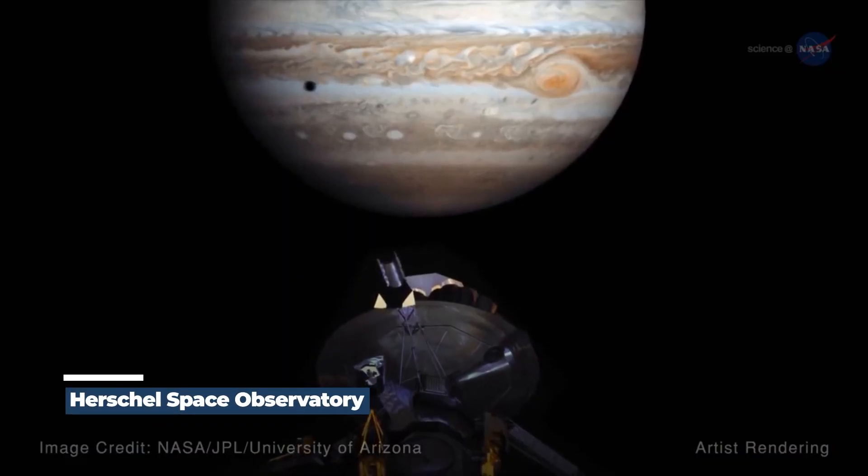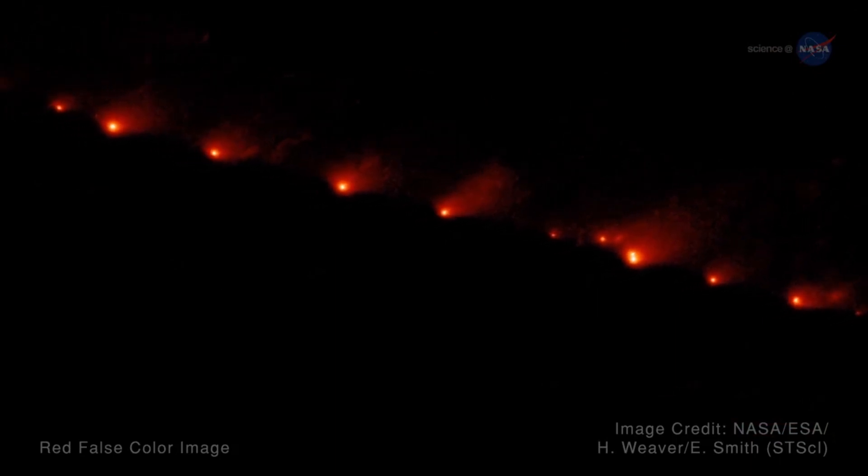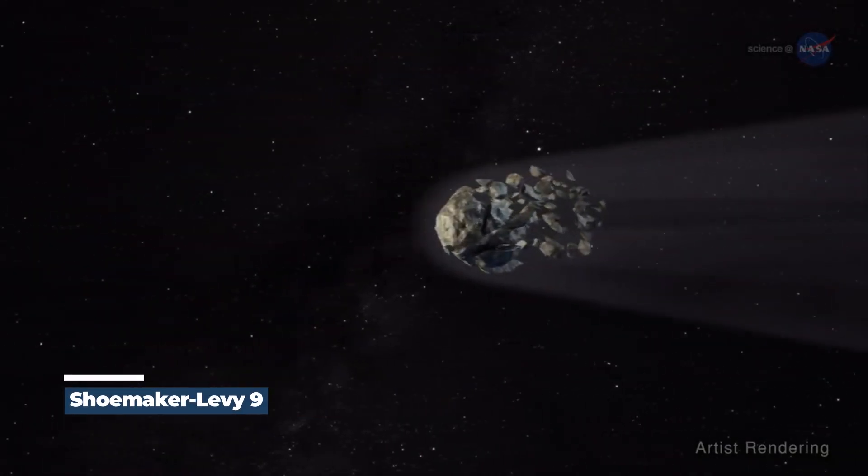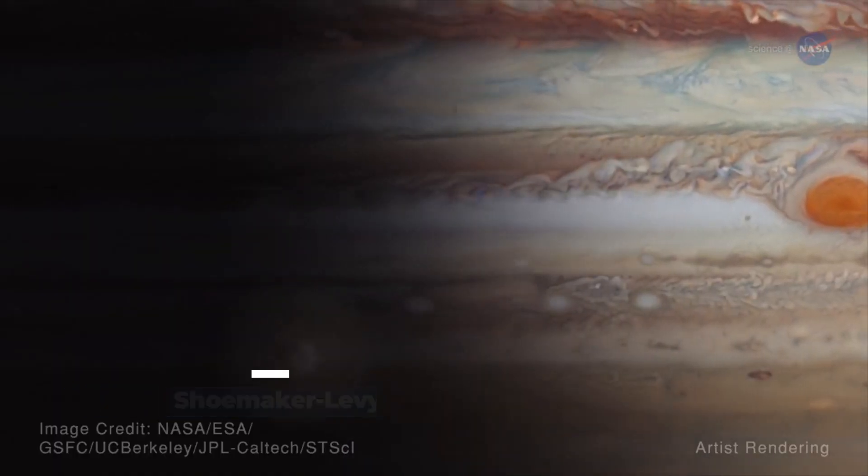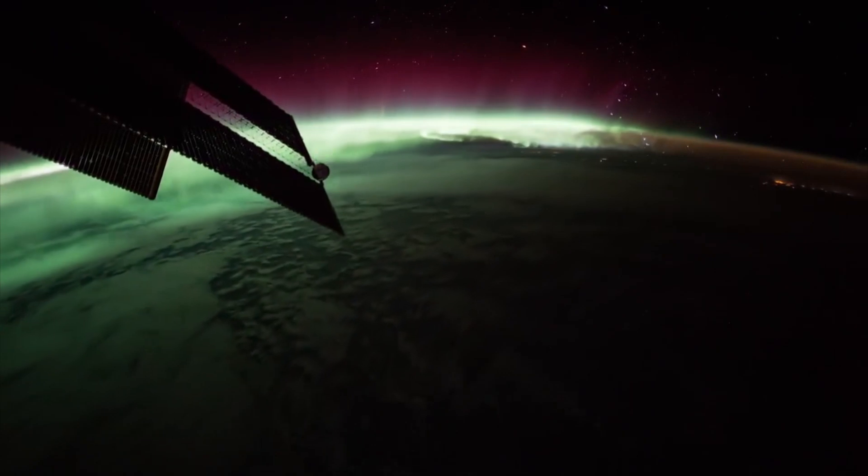The Herschel Space Observatory has discovered water vapors near the impact locations of an asteroid by the name of Shoemaker-Levy 9 in Jupiter's stratosphere. This is in contrast to what the previous models had predicted.